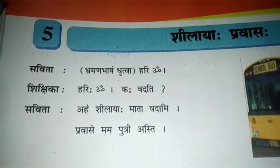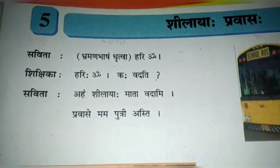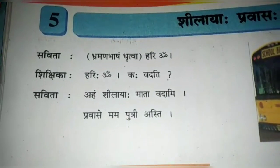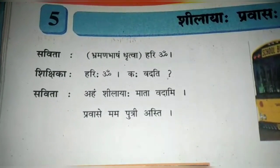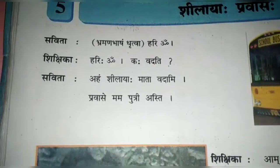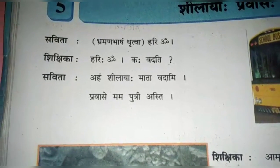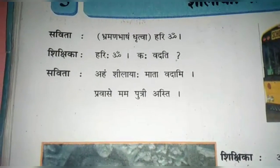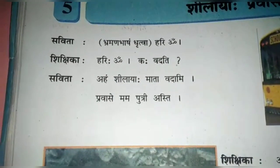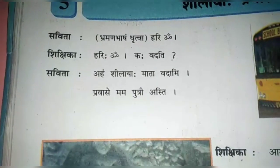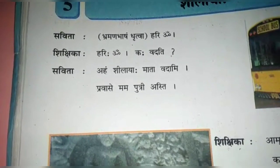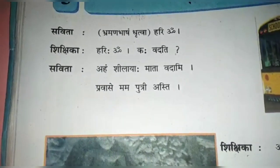Children love to travel. They gain a lot of knowledge through travel — qualities like togetherness, tolerance, regularity, and socialism develop in them. In this lesson, Sila is on a journey and has a long conversation with her mother on her cell phone. Some information about the Ajanta caves has been given through their dialogue.